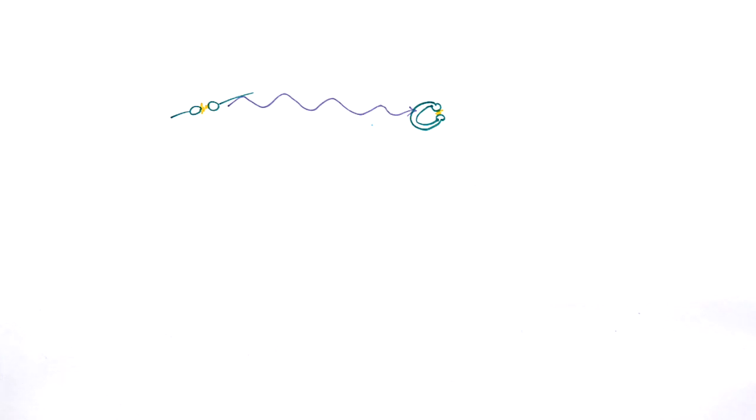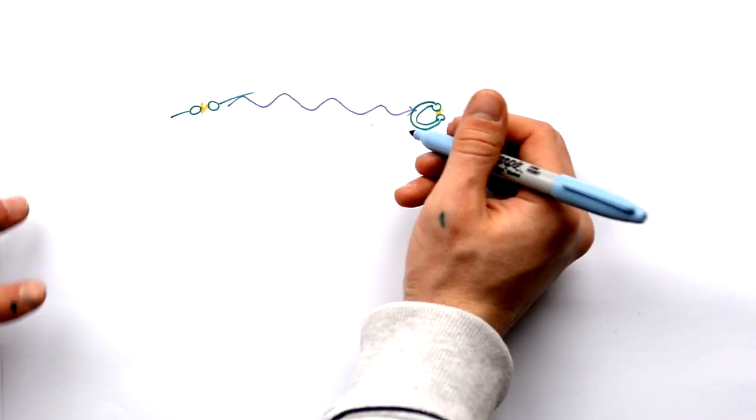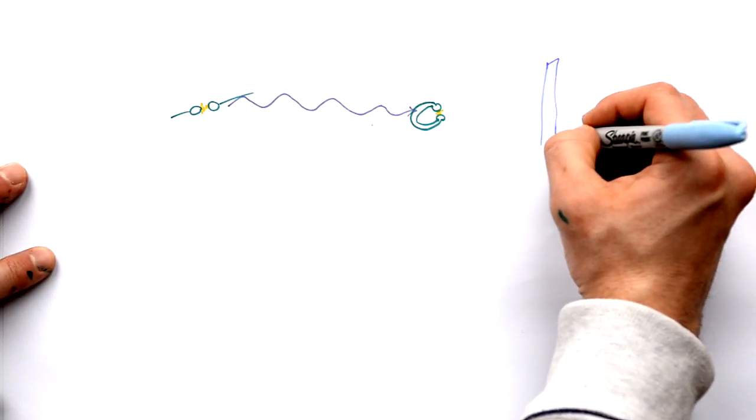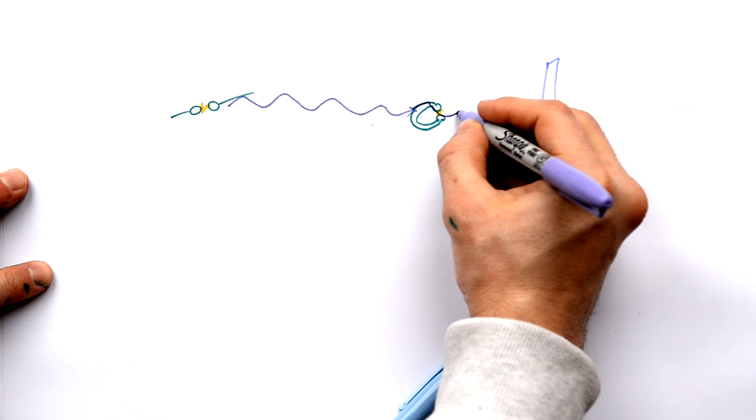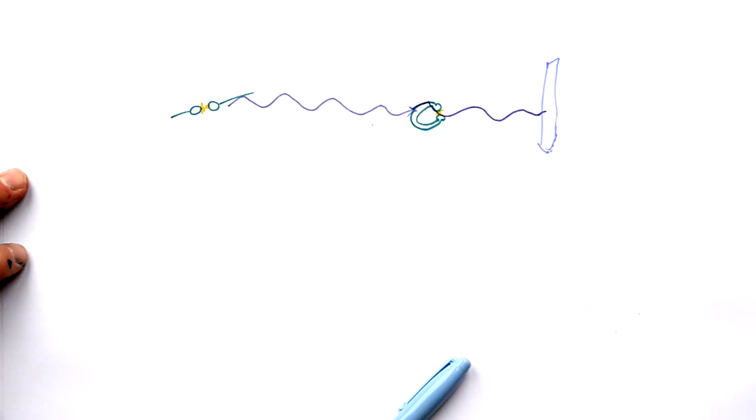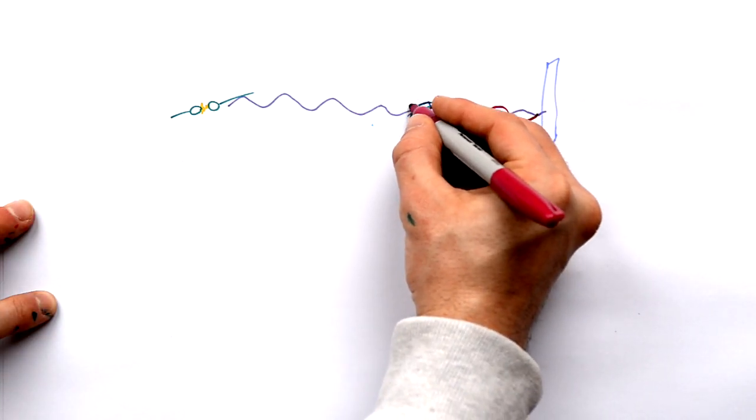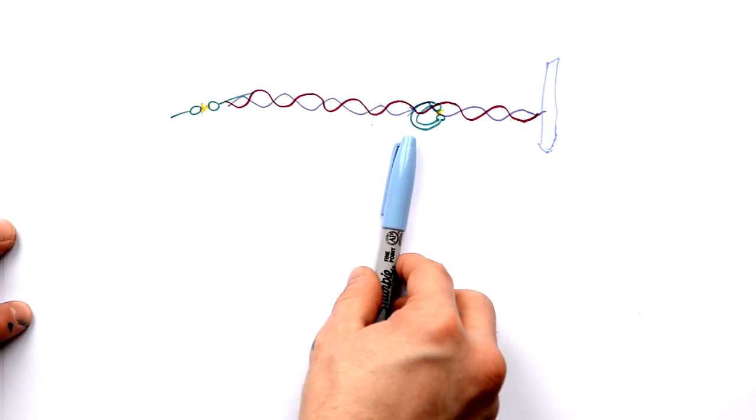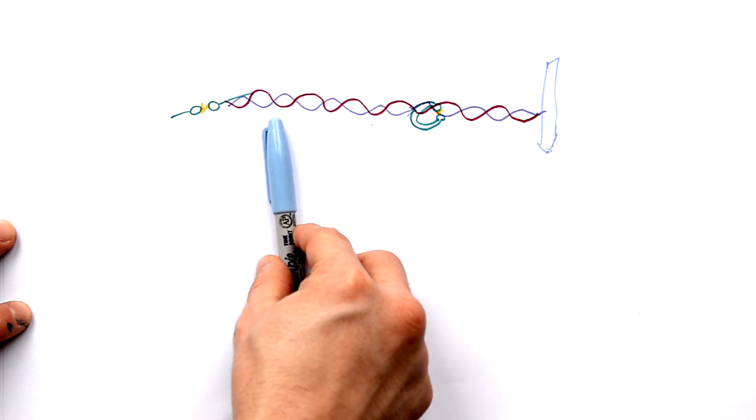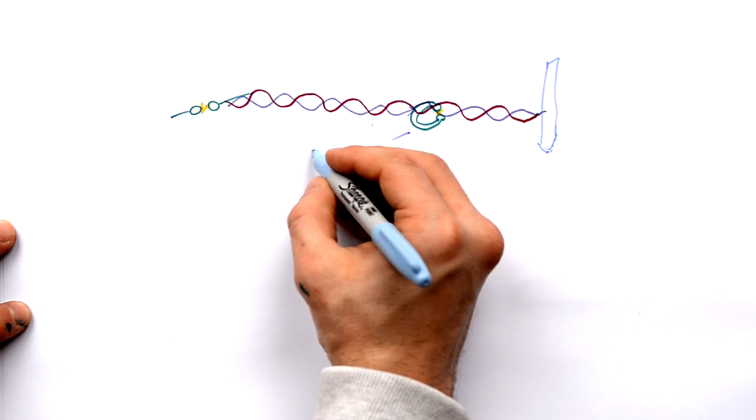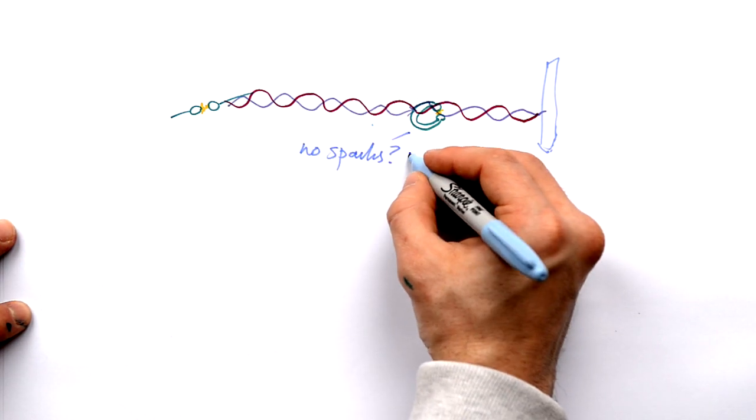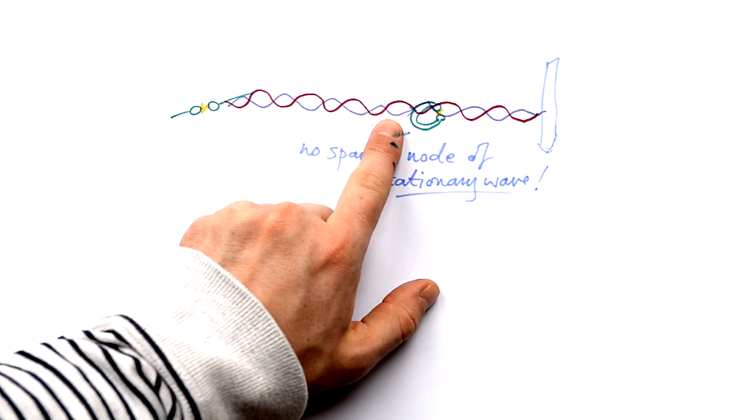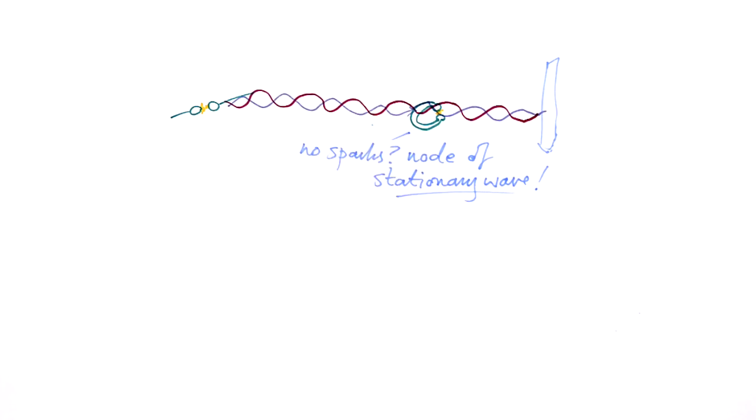So how did he measure the wavelength of these waves? He did it using standing waves. What he did was have a metal sheet that reflected the waves back. And when it was just at the right position, he found that he could move this detecting loop back and forth. And when there were no sparks, he was obviously at a node. Moving it along and then measuring the distance between the nodes, he could find out the wavelength of his radio waves. Knowing the speed as well, he could find out the frequency.